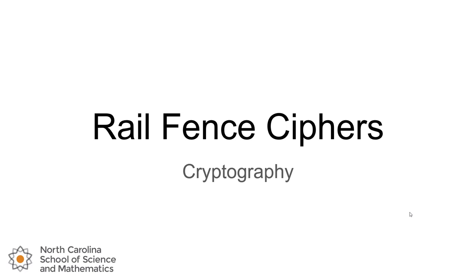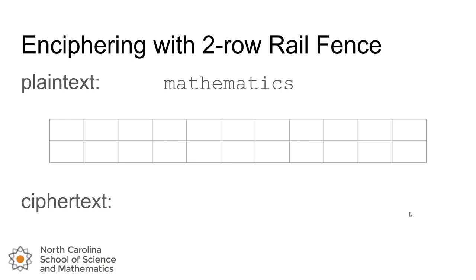Hey y'all, Mr. Gibson here. Welcome to the next lesson in cryptography. In this video we'll be taking a look at the rail fence cipher and how to use it to encipher and decipher messages by hand. Rail fence ciphers are a type of transposition cipher that uses rows or rails to separate out letters into the plain text message and then regroup them to form the cipher text.